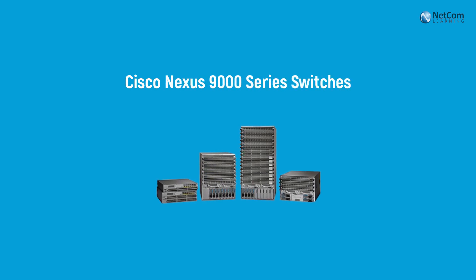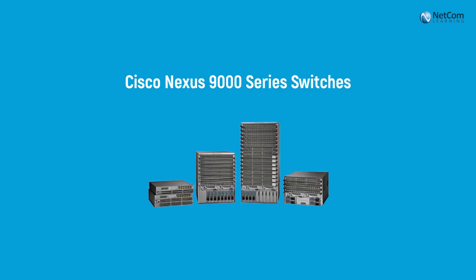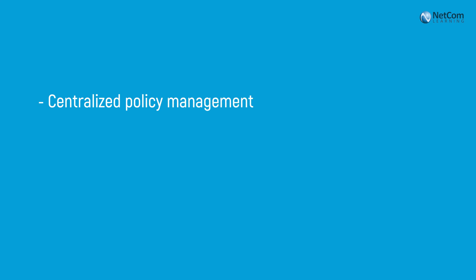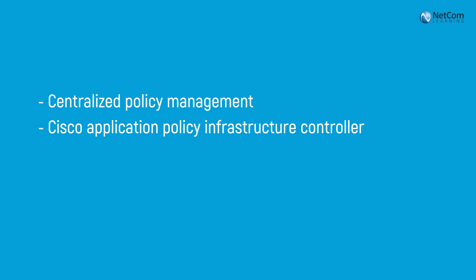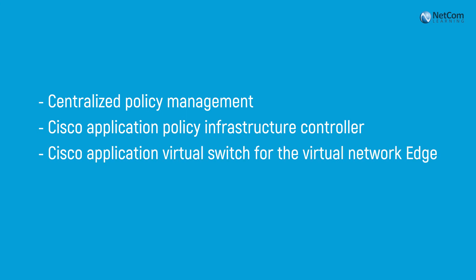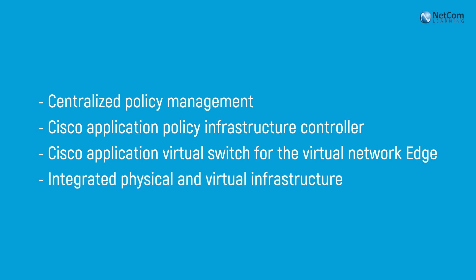Some of the things that make up Cisco's ACI are the new Cisco Nexus 9000 series switches. You have the ability for centralized policy management and the Cisco Application Policy Infrastructure Controller, or what they call APIC-EM, which we'll talk about in part two. You've got a Cisco application virtual switch for the virtual network edge, and an integrated physical and virtual infrastructure, which provides for an open ecosystem of network, storage, management, and orchestration vendors.